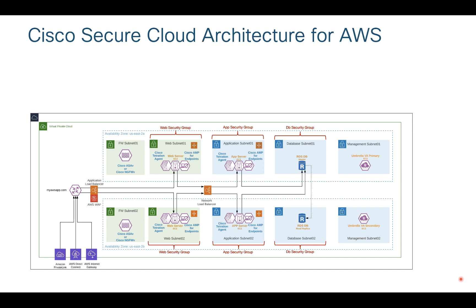If you look at this particular example, you will see that it has multiple availability zones and multiple tiers like web tier, app tier, and database tier. This is how customers deploy their workloads in the cloud. They will generally enable auto scaling on their workloads. When there is a spike in the network, based on the auto scale policy, new workloads are provisioned automatically and added to their application load balancer or network load balancer. In this situation, you need to apply the same security policies on your newly provisioned instances as well.